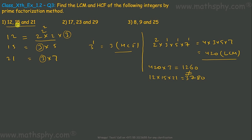When we have two integers, LCM × HCF equals the product of those two numbers. But in the case of three numbers, HCF × LCM is not equal to the product of those three numbers. Here, 420 × 3 = 1260, while 12 × 15 × 21 = 3780, which is not equal to 1260. So LCM × HCF ≠ product of the three numbers.